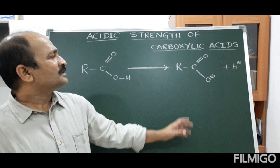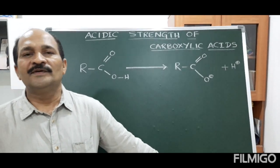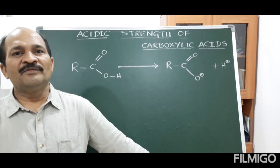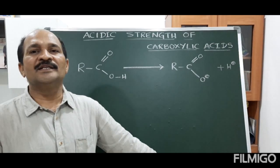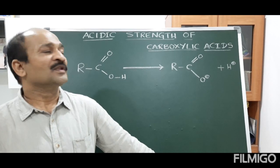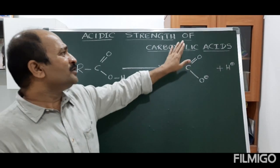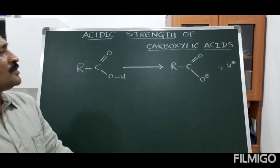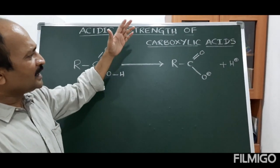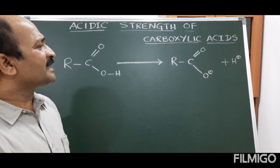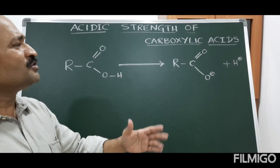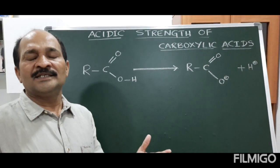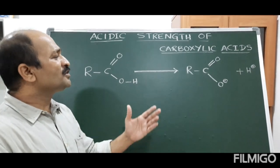Hi students, this is the continuation video on acidic strength of organic compounds. In the previous video we discussed acidic strength of alcohols and phenols. In this video I am going to concentrate on acidic strength of carboxylic acids — how their acidic strength compares with alcohols and phenols, and which carboxylic acid has higher acidic strength.